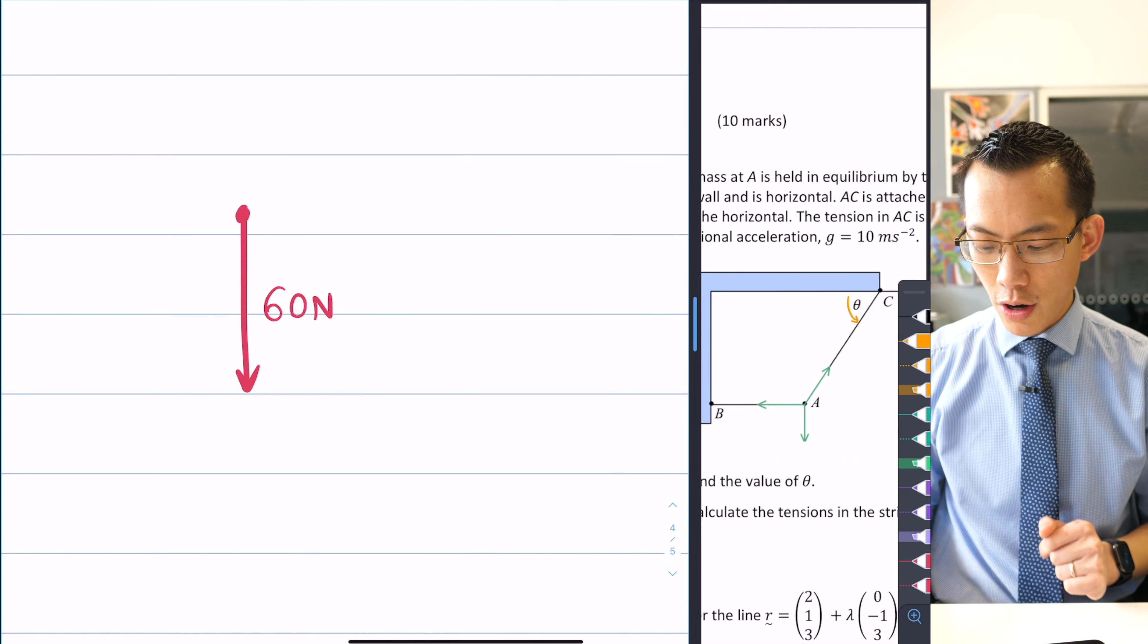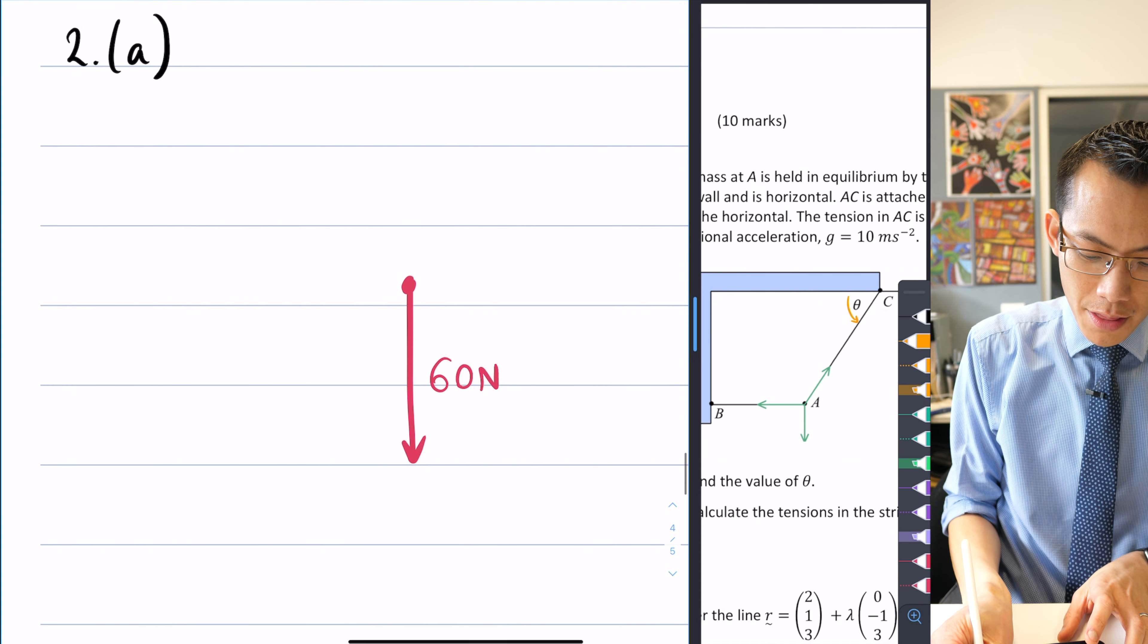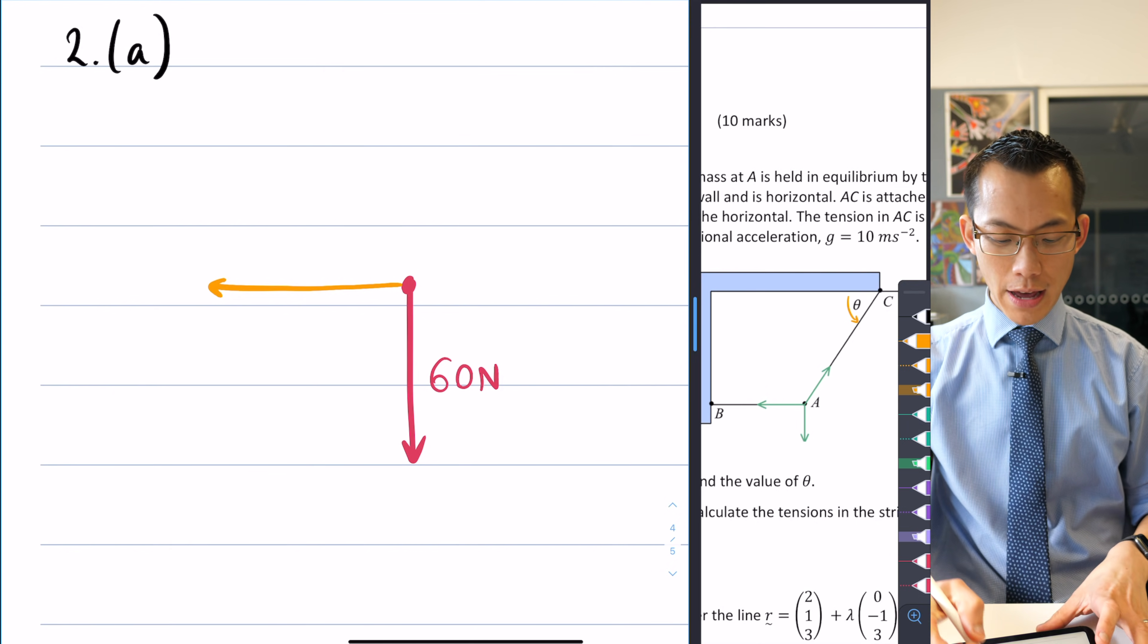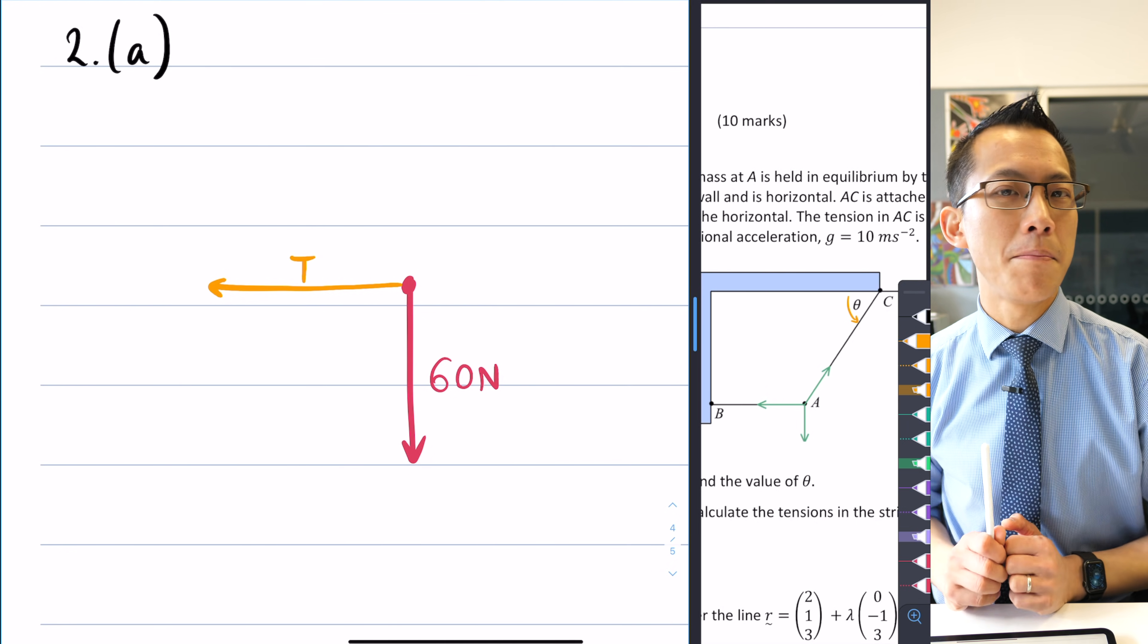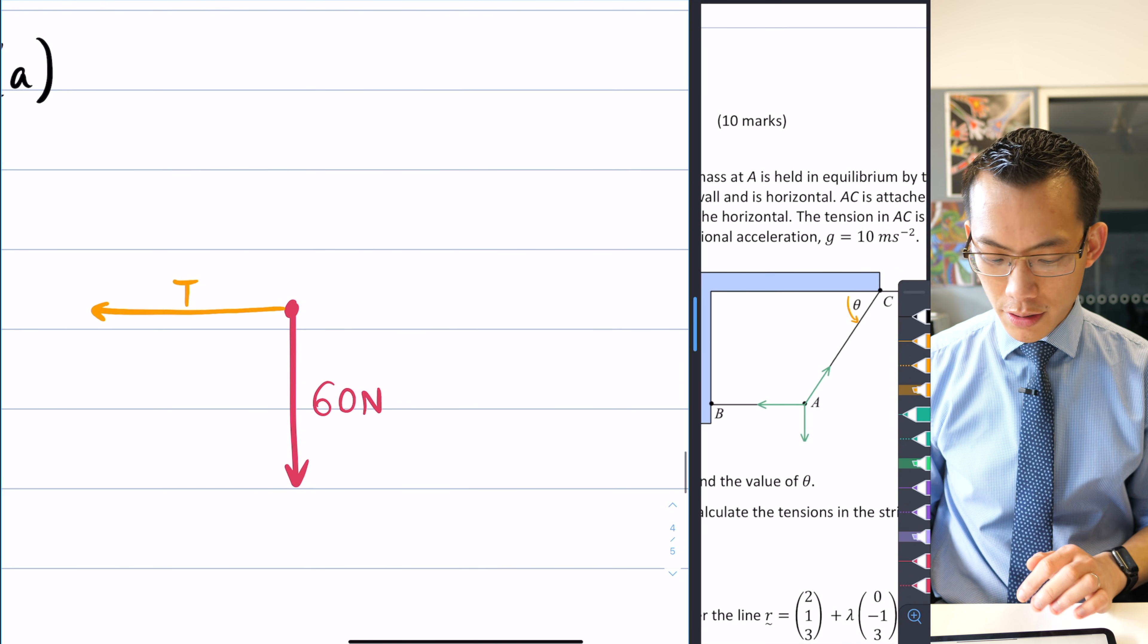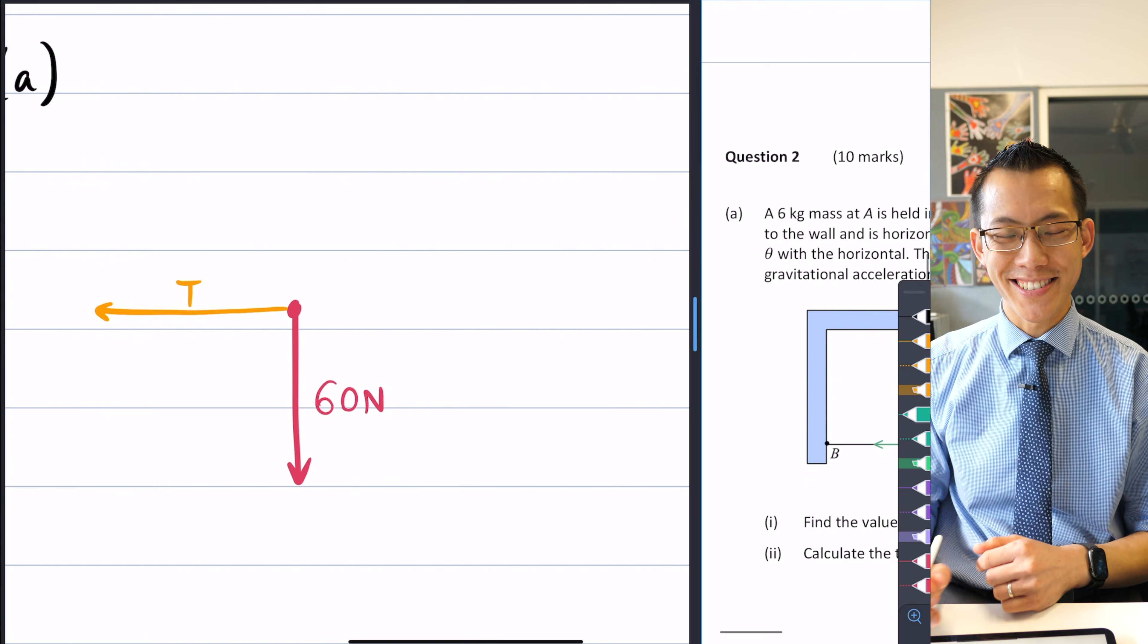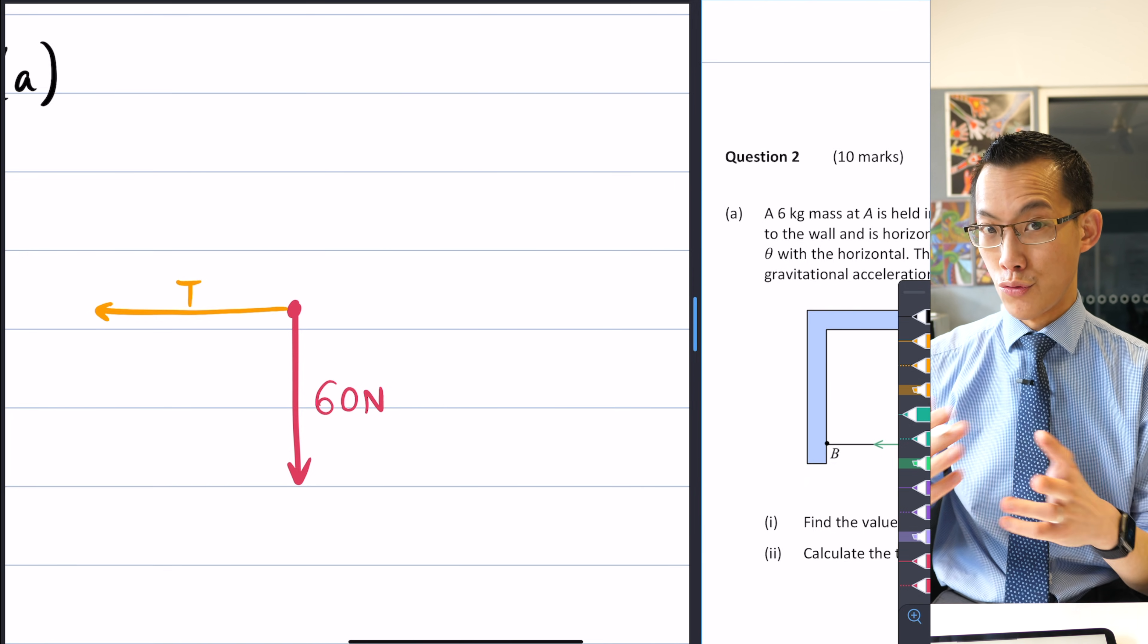Then there's this AB which is going horizontally towards the wall. There's going to be some tension in that. I'm just going to call it T. Remember, part two of this question is actually to find out what that tension is. And then lastly, I've got this tension from the ceiling rope, and it's headed off at a funny angle.